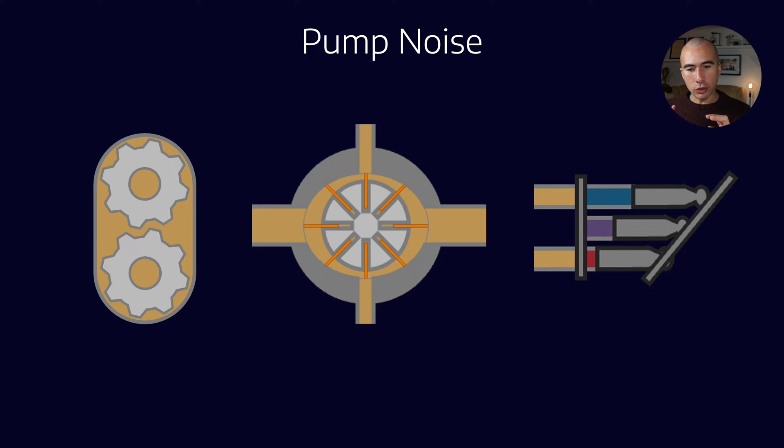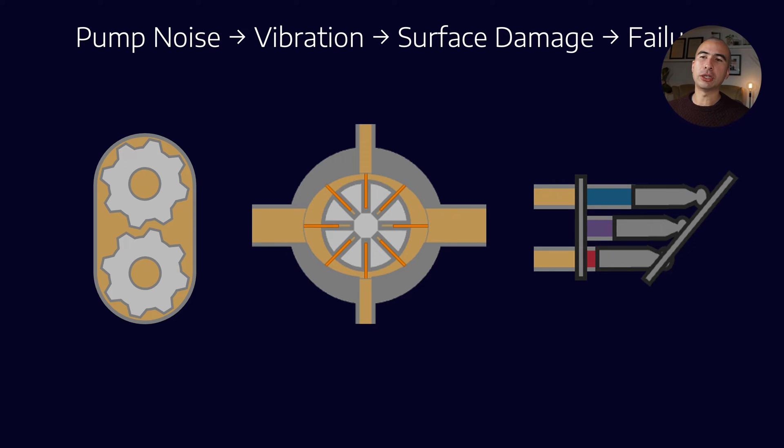Now when you have micro-dieseling, it usually is recognizable by some kind of pump noise. You'll hear noise coming out of a hydraulic pump that is very unusual. It sounds almost like someone is gargling marbles. It's a very clattering sound. And when you hear those pump noises, that can lead to vibration and then surface damage and ultimately failure of the system.